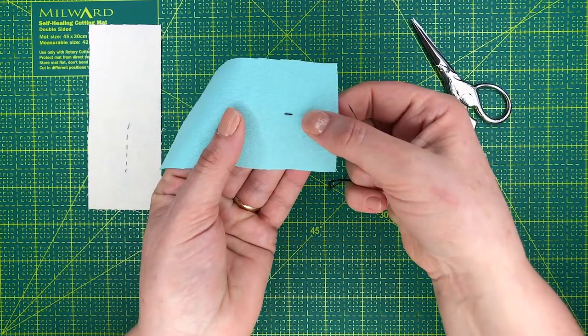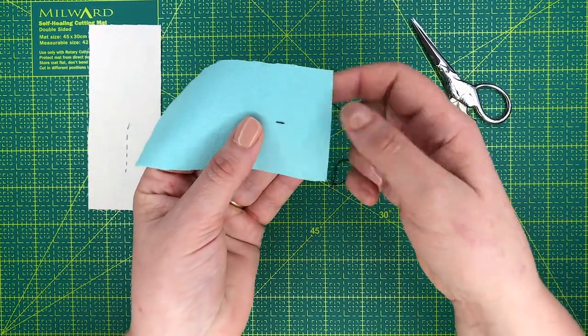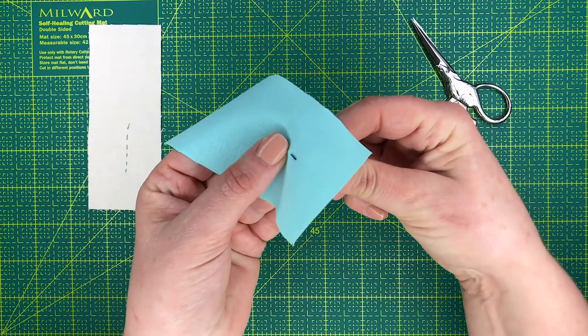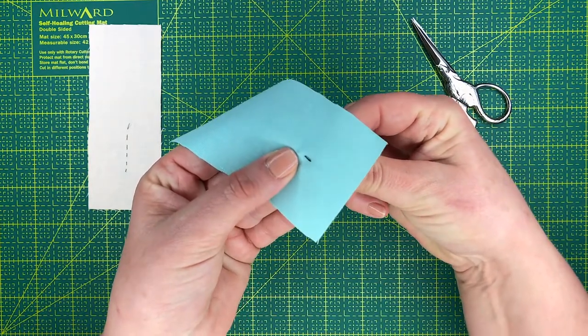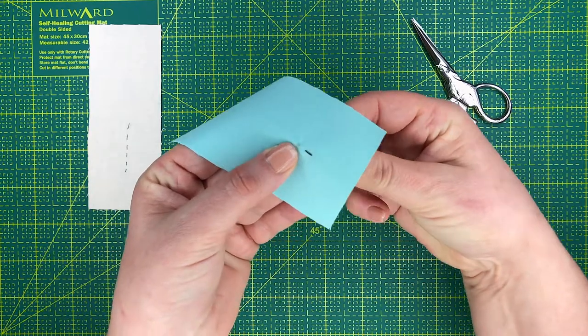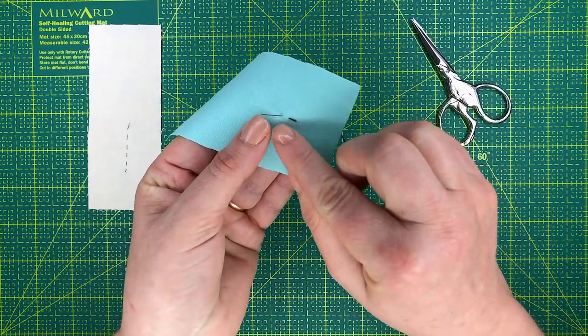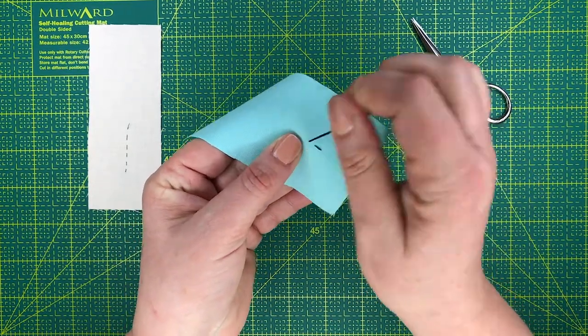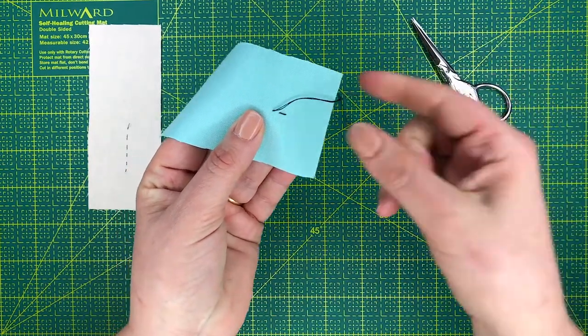And that is your first stitch in the running stitch. Now to continue on in a straight line again, you poke through from the back, roughly the same length of stitch, and pull it through. And that is the second stitch.